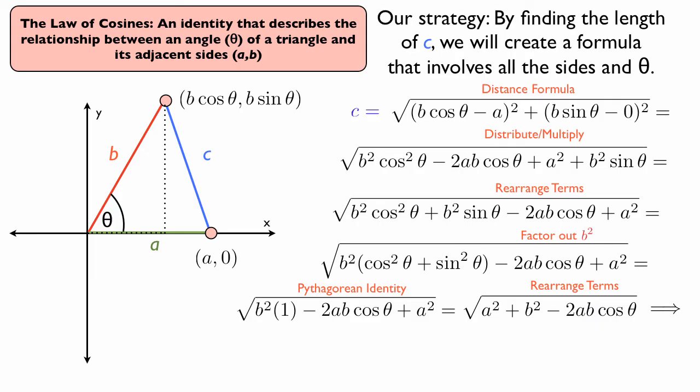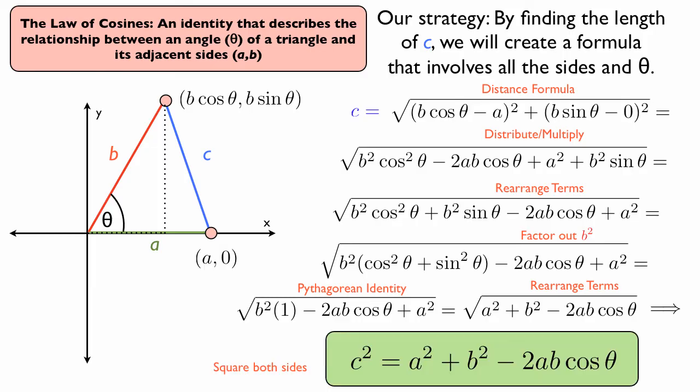And from there, we have just one more step, which is to square c, and to square what c is equal to at the end of all these calculations. So we have c squared is equal to the square of what's in the square root sign, or just a squared plus b squared minus 2ab cosine theta.